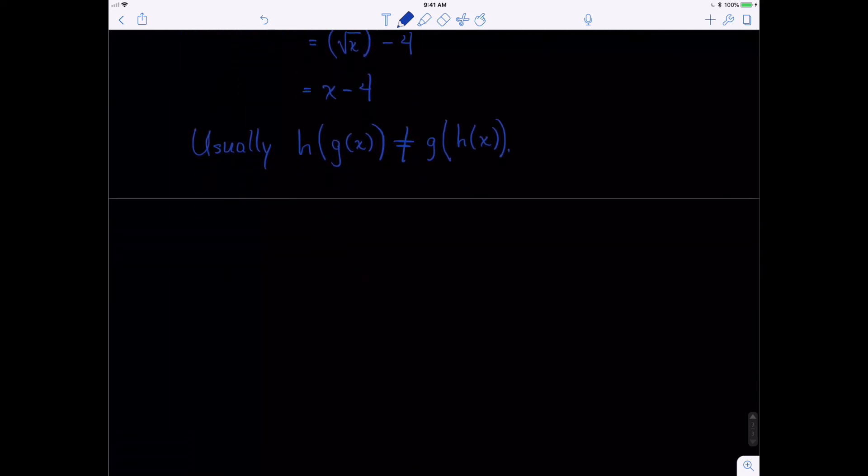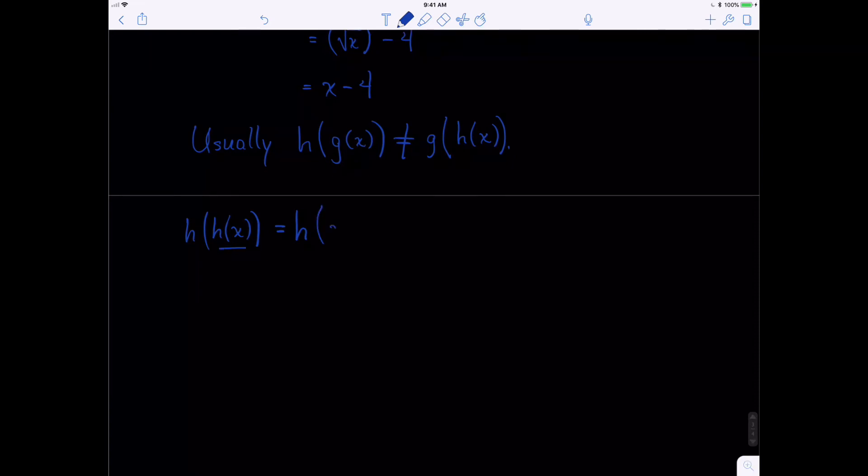So let's try one more. Let's try h of h of x. Our first step is to replace this h of x with what h of x is. And that is x squared minus 4. Now what we do is we put this x squared minus 4 into x squared minus 4. So it becomes x squared minus 4 squared minus 4.